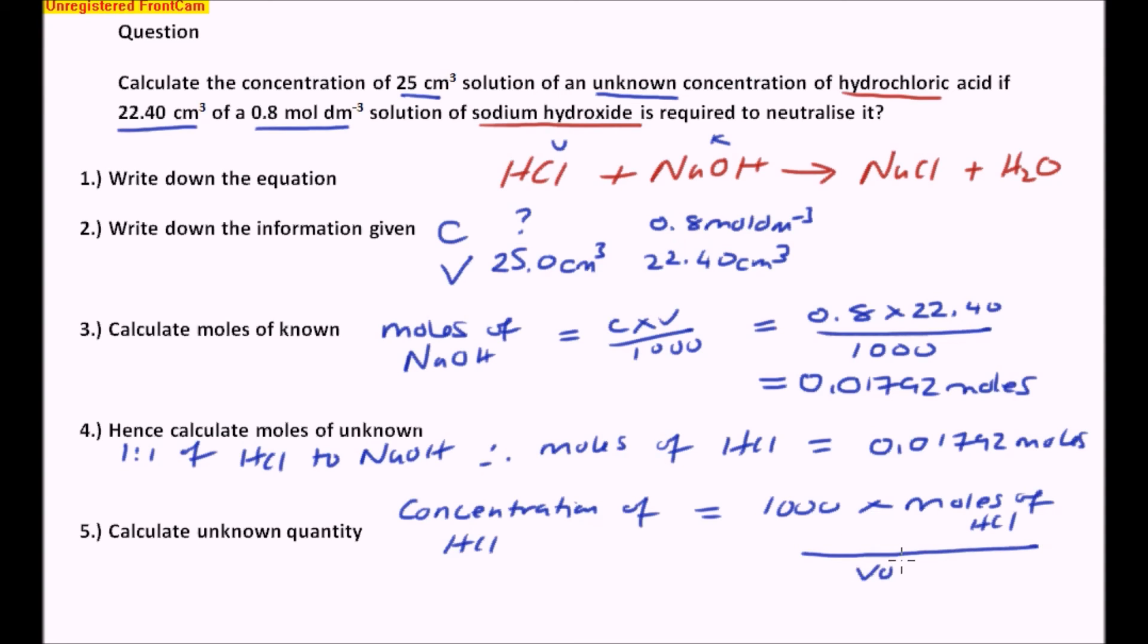Okay, so in my example here now, I'm going to use the numbers 1,000 times by the number of moles I just worked out, 0.01792, and I'm going to divide that by the volume of HCl, which is 25.